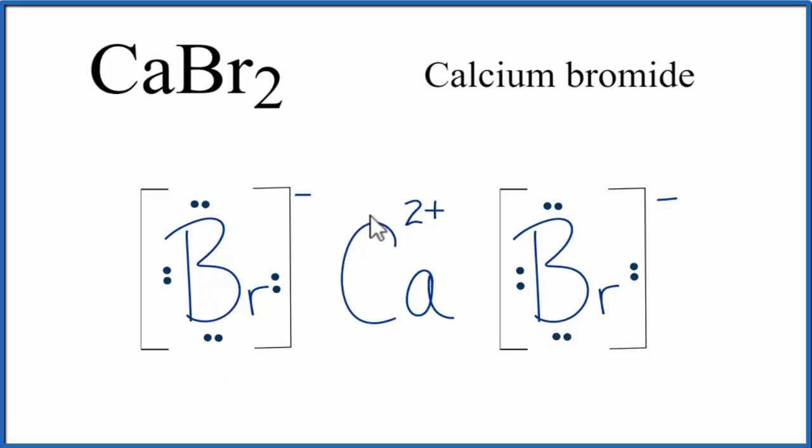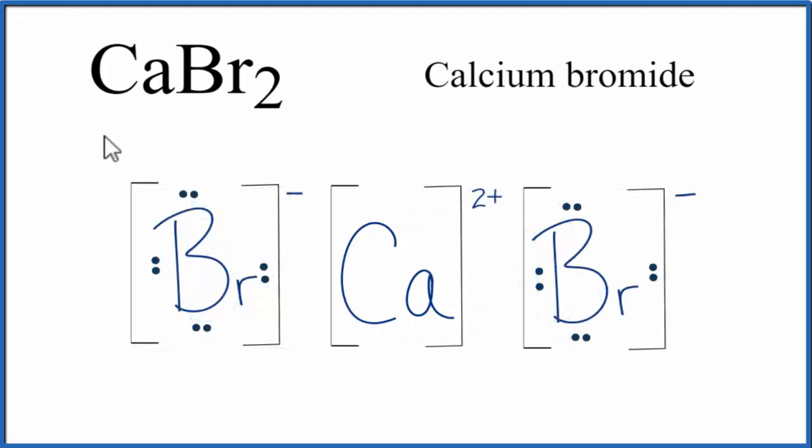Sometimes you'll also see brackets placed around the metal. And that's the Lewis structure for CaBr2, calcium bromide.